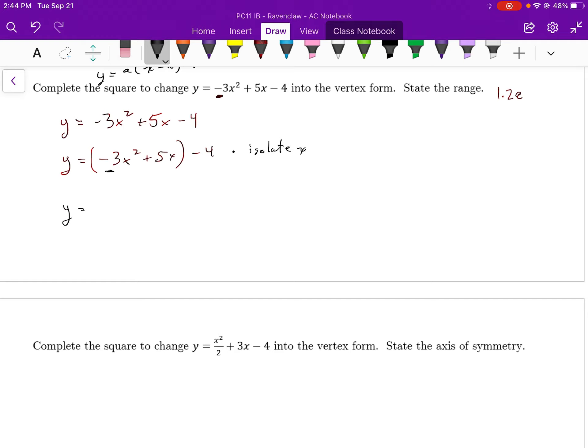Now y is equal to, I'm going to factor out negative 3. And when I factor out negative 3, remember negative 3 is similar to dividing. So if I factor out negative 3 from negative 3x squared, you get x squared. And then if I factor out negative 3 from 5x, it is minus 5 over 3x.